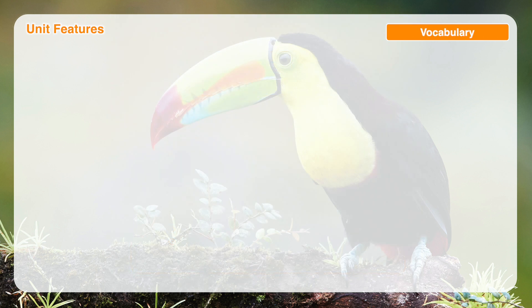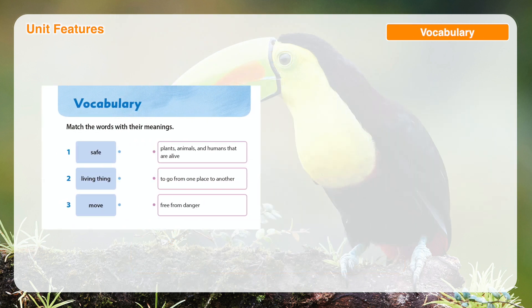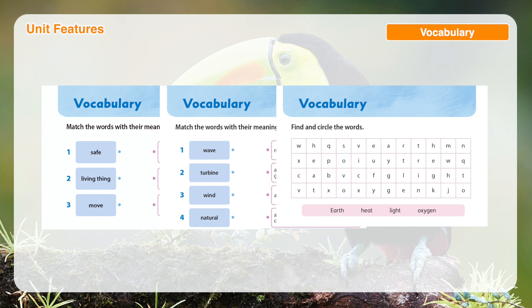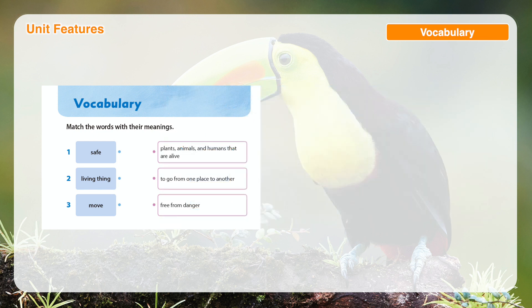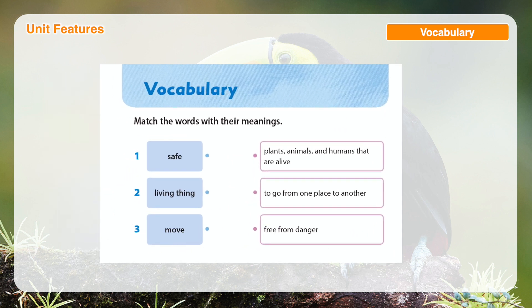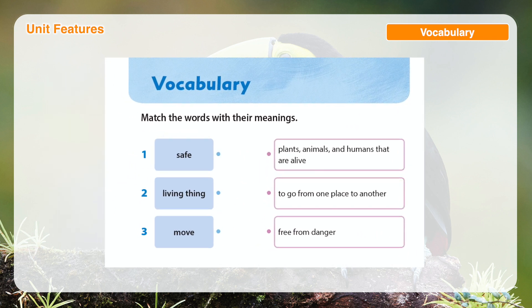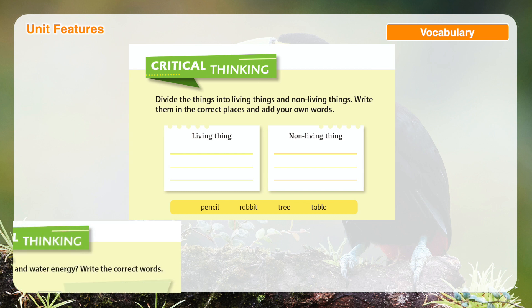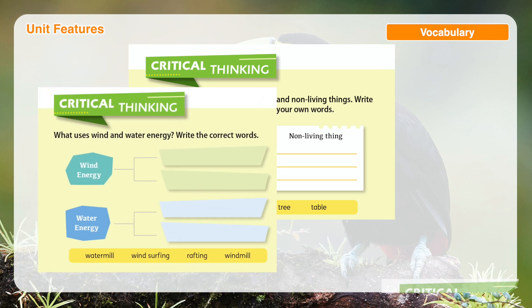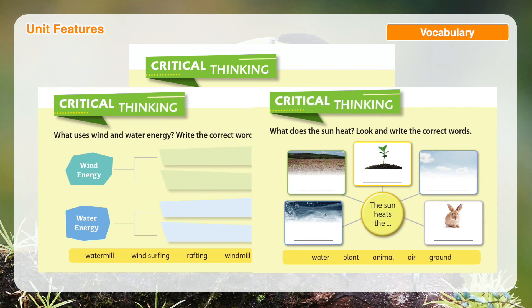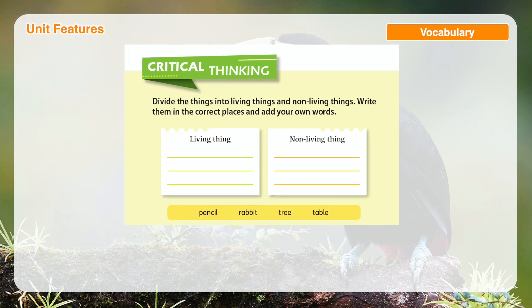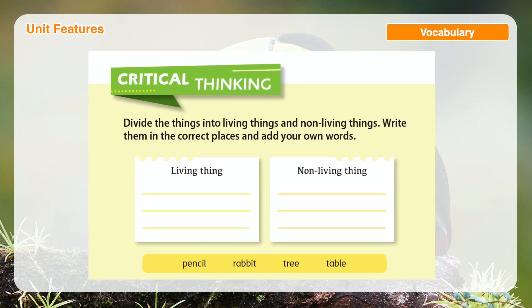Vocabulary is designed to reinforce the key words from the unit in fun and engaging ways. Students will be asked to do a fill-in item or a finding and matching exercise. Critical thinking is designed to check the student's understanding of the information. Some activities are an extension of the unit by adding depth to lesson concepts.